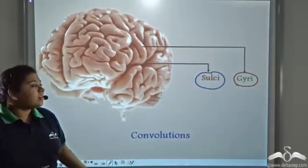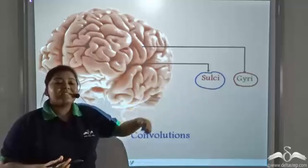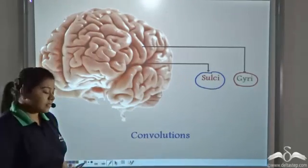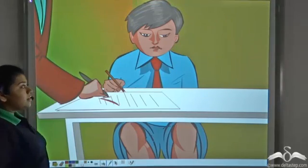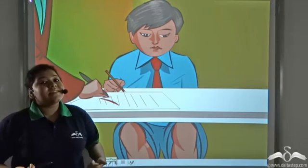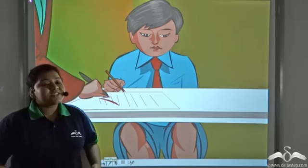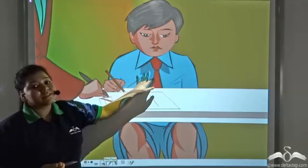Gyri and sulci together form the convolutions. More the number of gyri and sulci in the cerebrum, more is the intelligence level in the person.